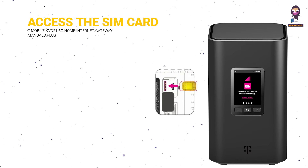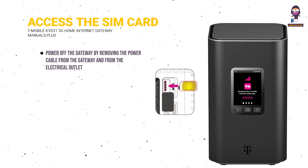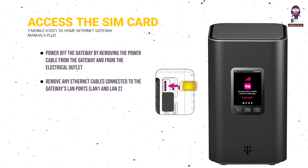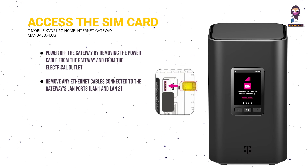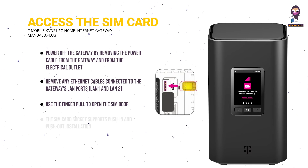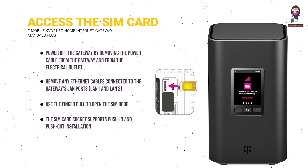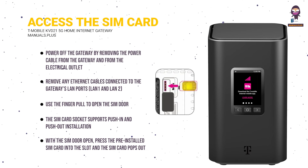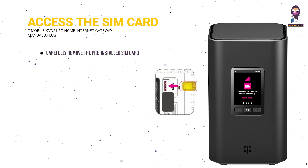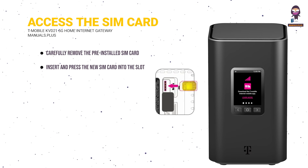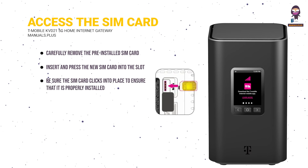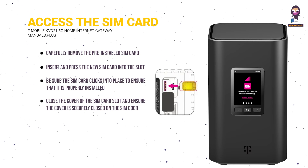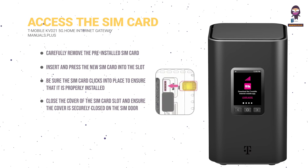Access the SIM card from the backside of the gateway. Power off the gateway by removing the power cable from the gateway and from the electrical outlet. Remove any Ethernet cables connected to the gateway's LAN 1 and LAN 2 ports. Use the finger pull to open the SIM door. The SIM card socket supports push-in and push-out installation. With the SIM door open, press the pre-installed SIM card into the slot and the SIM card pops out. Carefully remove the pre-installed SIM card, then insert and press the new SIM card into the slot until it clicks into place. Close the SIM door securely.